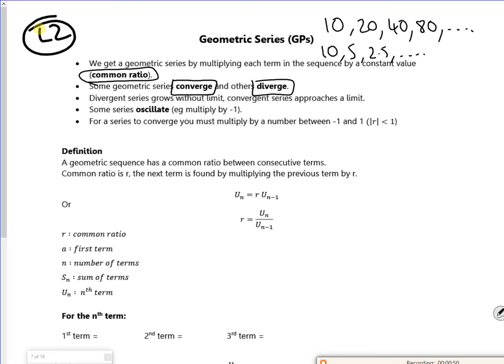So if it diverges, it grows without limit, whereas if it converges, it approaches a limit. Now you can have ones that oscillate, so they bounce.